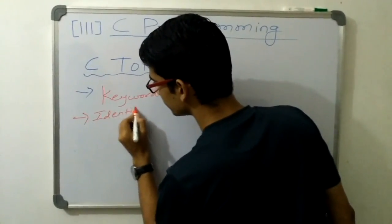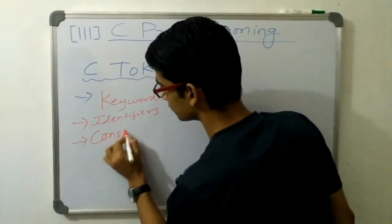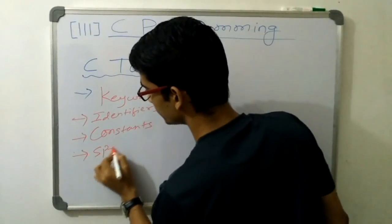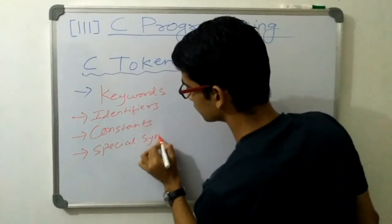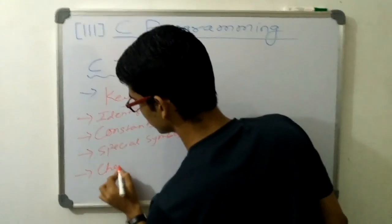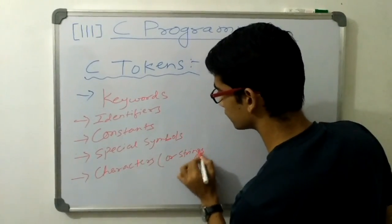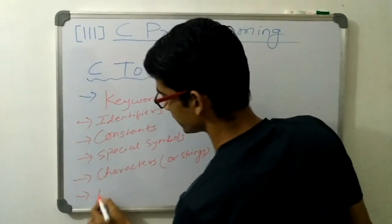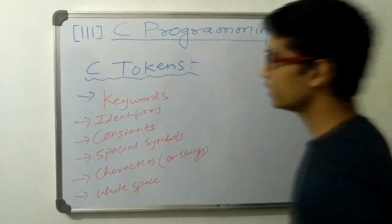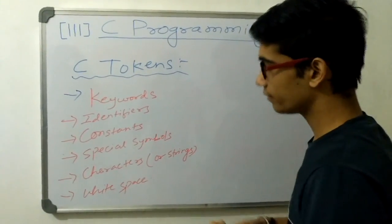C tokens consist of keywords, identifiers, constants, and special symbols, characters and white spaces. These are the C tokens.